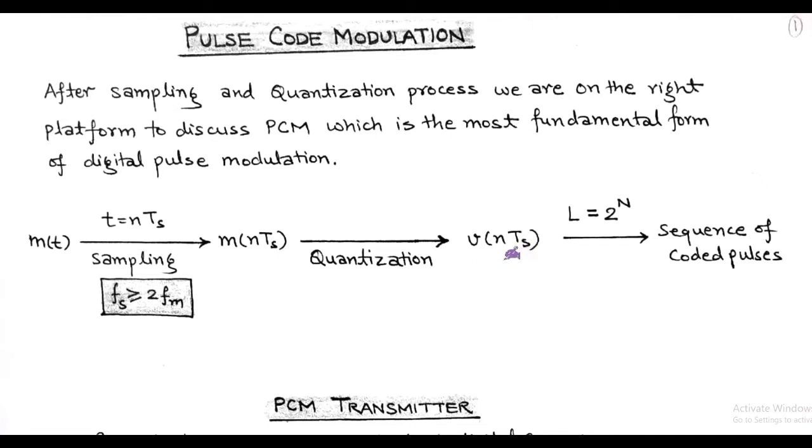Each discrete quantized amplitude level is represented by a unique code according to the formula L = 2^N, where L is called the quantization level and N is the number of bits per word. So in PCM, the sequence of coded pulses is generated at the transmitter site.